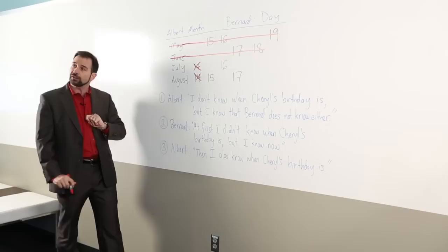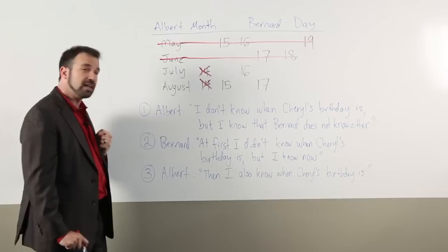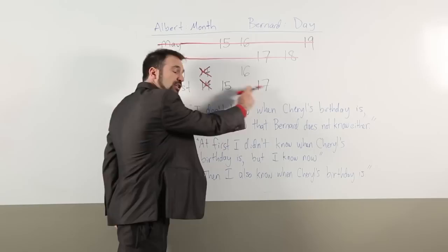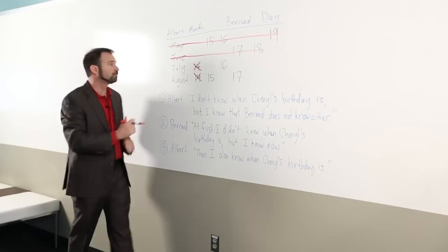Finally, we go to step three. Albert says, then I also know when Cheryl's birthday is. Now, how could he make that statement truthfully? Well, if he had been told the month of August, he could not make that statement, because there are still two possibilities left, and he would have no way of knowing which is which.